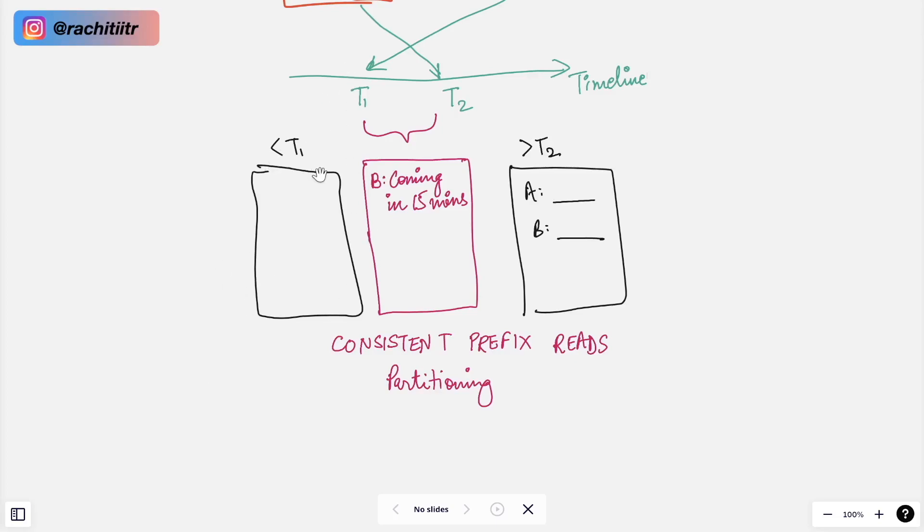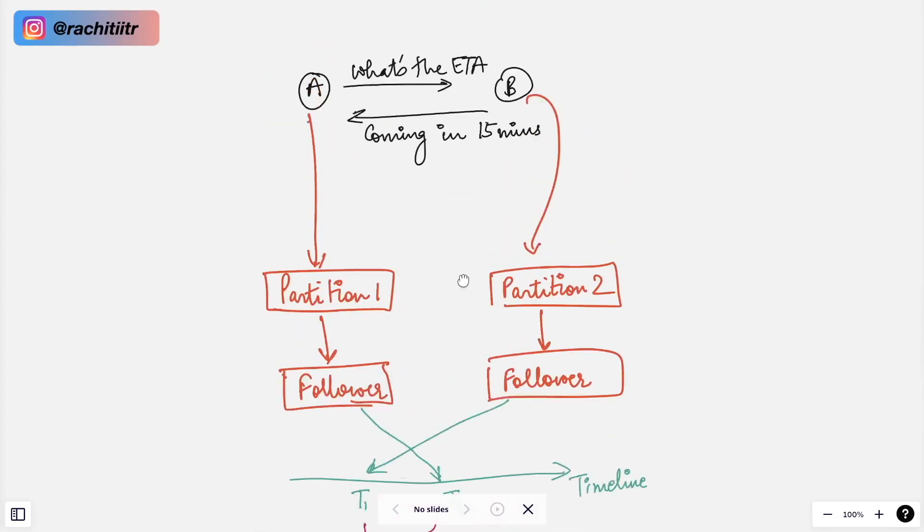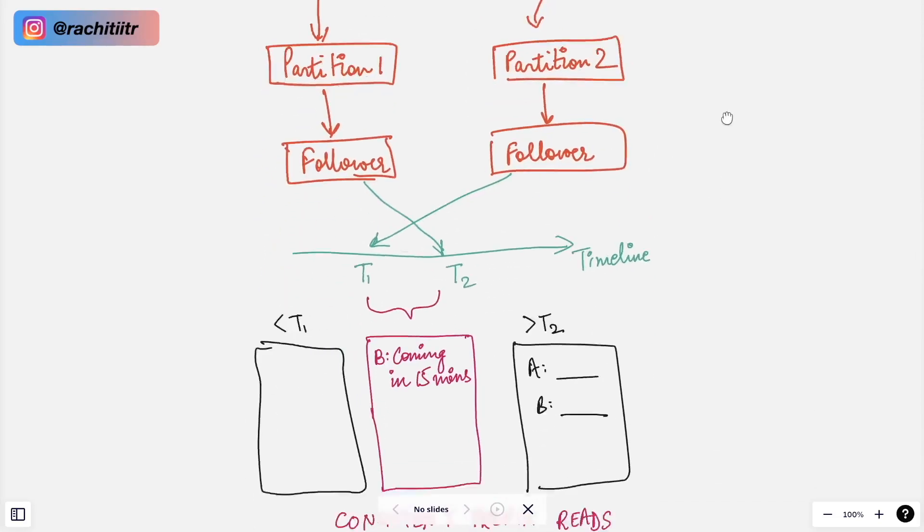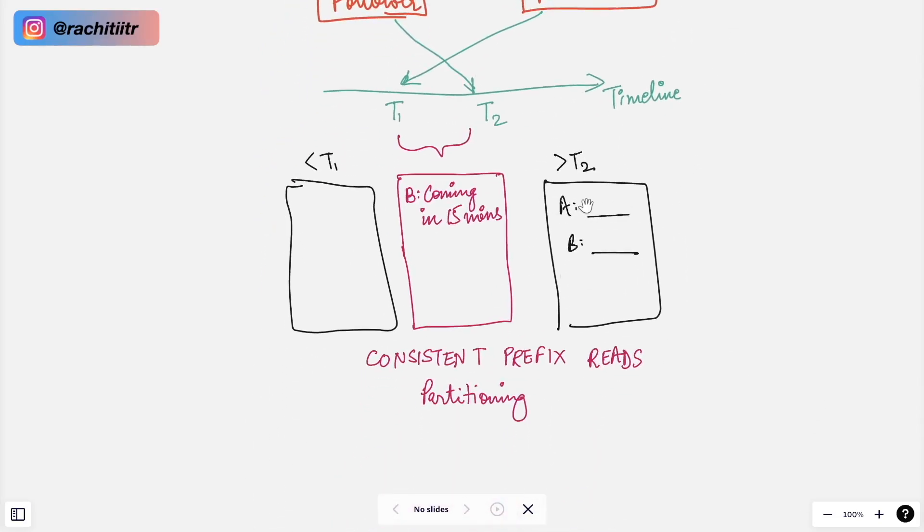So as you can see this T1 can happen before T2, and from the user C perspective this is what they are seeing. Before T1 they see an empty chart. But between T1 and T2 they are seeing the reply of user B before the message of A received. And after T2 everything is working fine because you can see that there would be some timestamp which is associated. So you can sort in your application based on timestamp and now you can see the correct order that there was a question which A had asked and B had just replied to it.